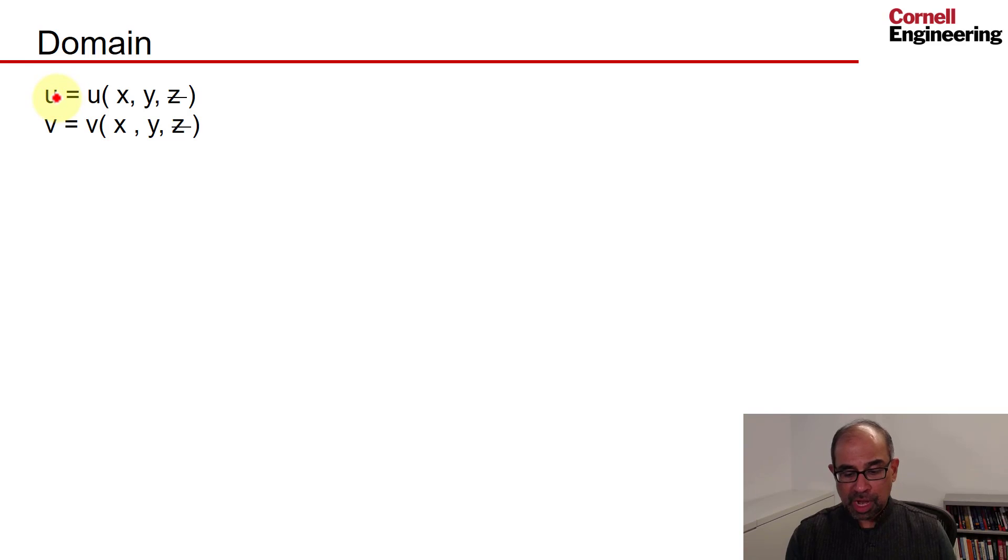The primary unknowns, u and v, are a function of x and y only because of the 2D plane stress assumption, so there's no dependence on z. Since u and v don't depend on z, we need to solve for them only in the xy plane, which means that the domain is 2D.